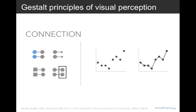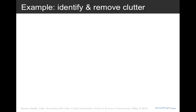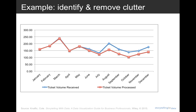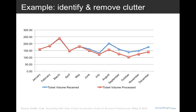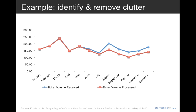So we got a little theoretical there. Let's look at some practical application of the Gestalt principles through an example. This is an example from the IT world where we're looking at ticket volume — issues coming in with the blue line and ticket volume being processed with the red line. If we take a look at this graph with an eye towards clutter, what can we get rid of? For me, there are six main changes we can make. First off, let's get rid of the graph border. Next, the grid lines. It's always amazing to me how much those two steps alone do in terms of making our data stand out more.